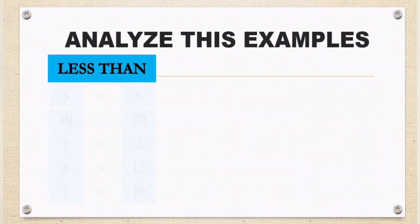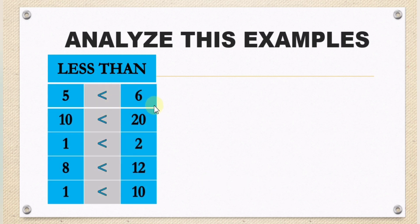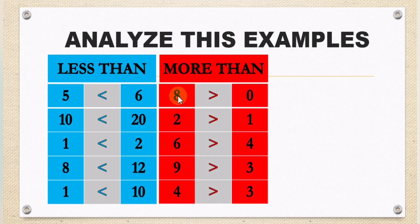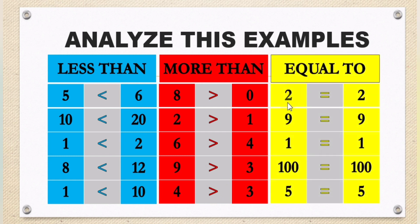Analyze these examples. Less than: five is less than six; ten is less than twenty; one is less than two; eight is less than twelve; one is less than ten. More than: eight is more than zero; two is more than one; six is more than four; nine is more than three; four is more than three. Equal to: two is equal to two; nine is equal to nine; one is equal to one; one hundred equals one hundred; five is equal to five.